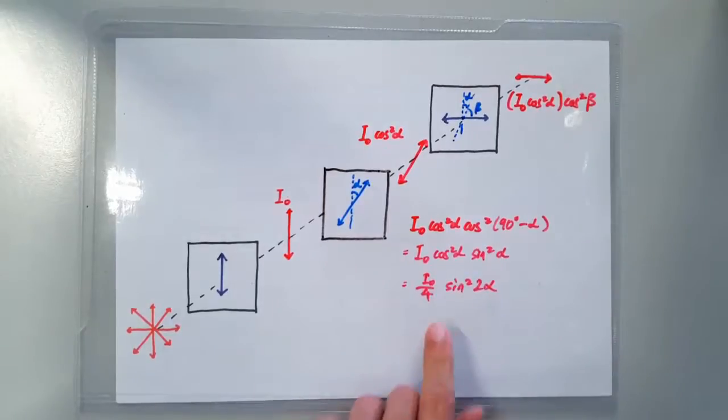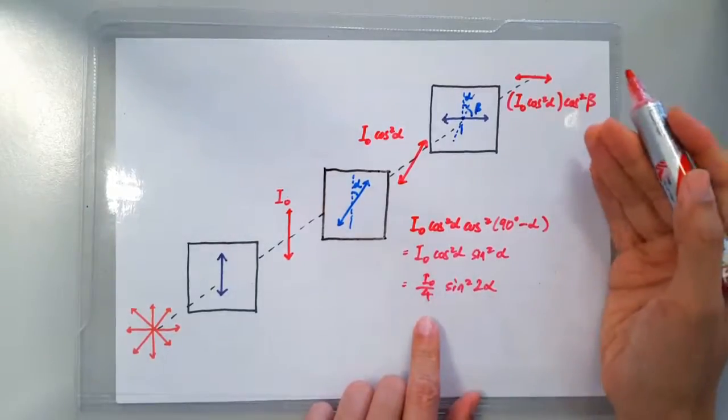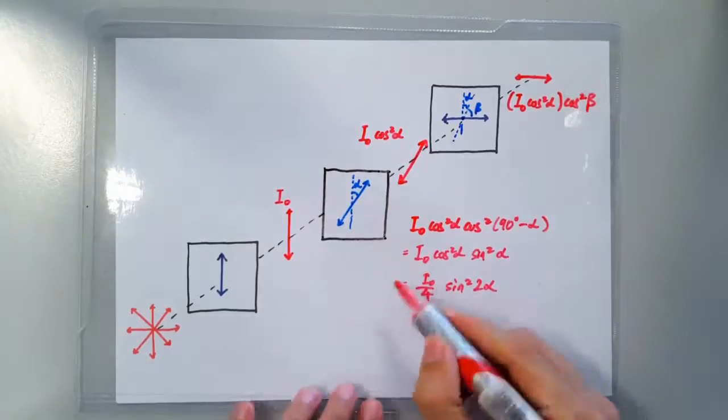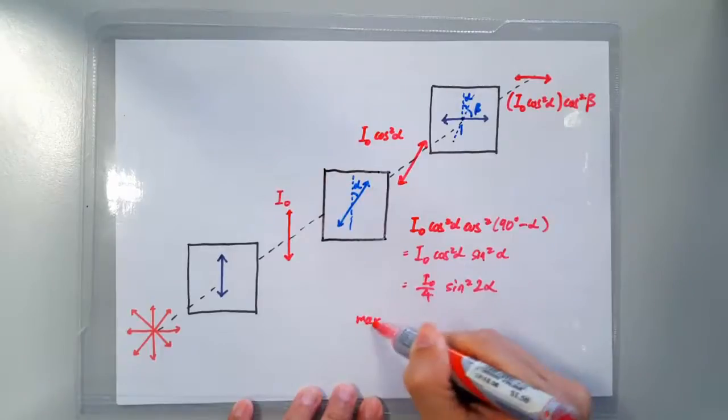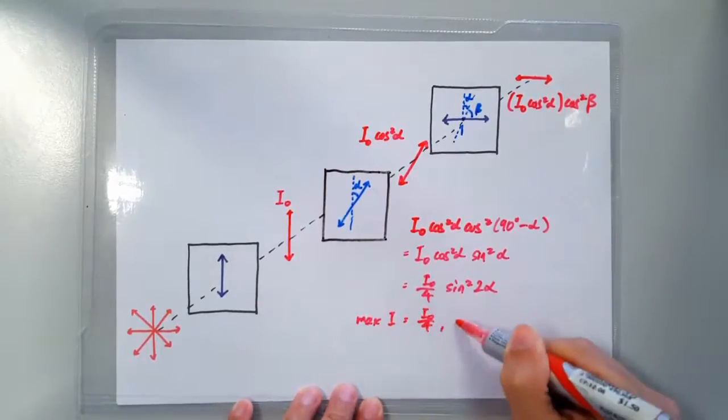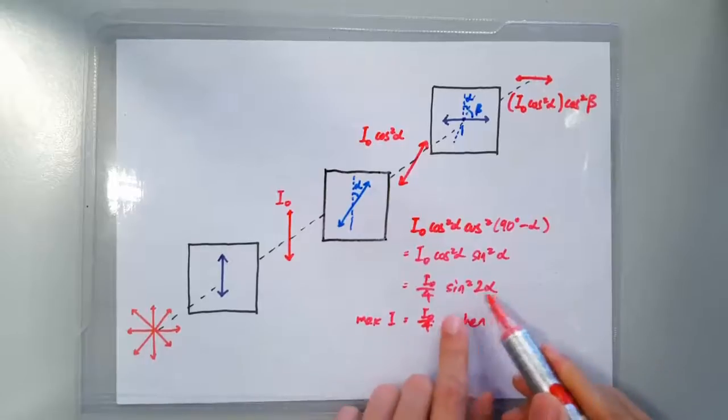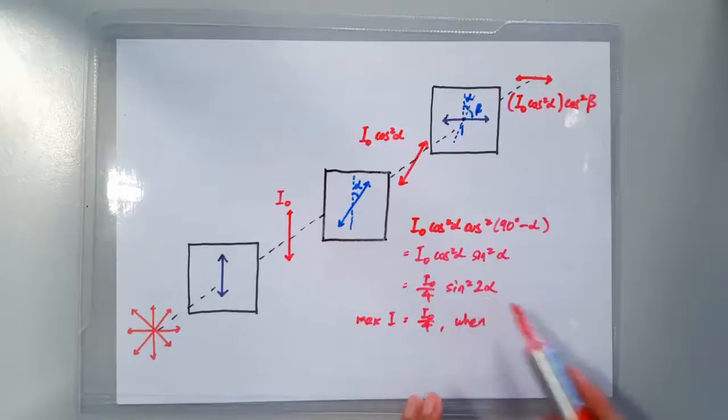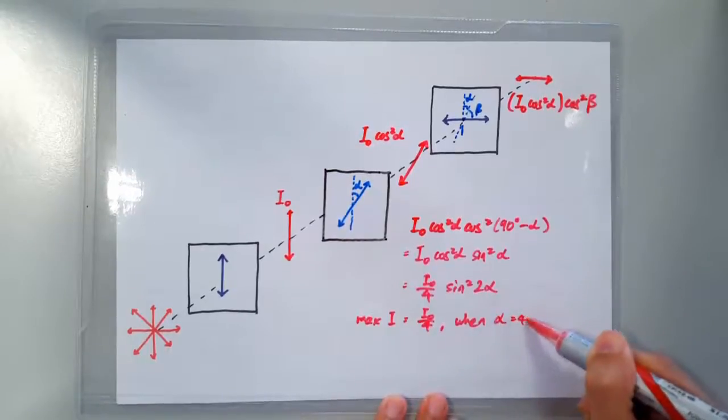This means that the maximum intensity we can get is actually I₀/4. And this happens when sin²(2α) is 1 because that's the maximum value of sin²(2α). And that happens when alpha is 45 degrees.